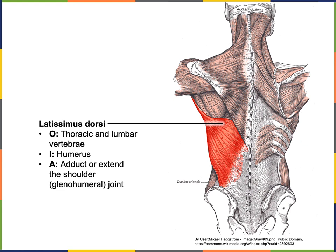With a posterior view, the large superficial muscle on the posterior of the abdominal region is latissimus dorsi. The dorsi part of that word refers to the dorsal region, where the origin is — on the lumbar vertebrae as well as the more inferior thoracic vertebrae. The insertion is on the humerus, enabling latissimus dorsi to perform adduction as well as extension at the shoulder joint.